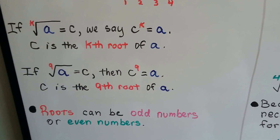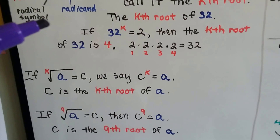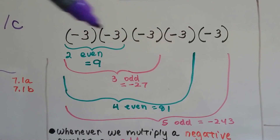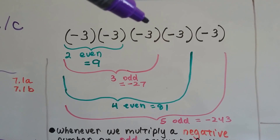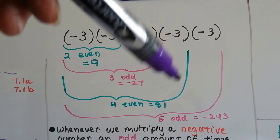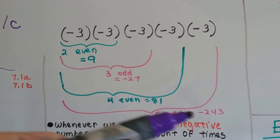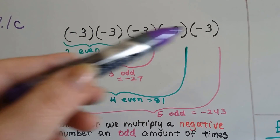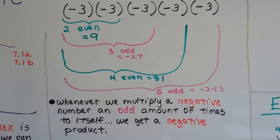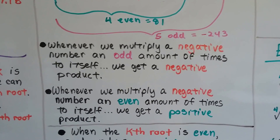Roots can be odd numbers or even numbers — we discussed that in the last video. So this could be an odd or even number. 9 is an odd number, and 4 would be an even. When we have negative 3 times negative 3, it's going to make a positive 9 — that's an even amount of negative 3s, there's 2 of them. When we have an odd amount of negative 3s — now we have 3 of them — it's going to make negative 27. When we have 4 of them, it brings us back to positive 81. So every time we have an even amount, we have a positive. Every time we have an odd amount, we have a negative answer. Whenever we multiply a negative number an odd amount of times to itself, we get a negative product. Whenever we multiply a negative number an even amount of times to itself, we get a positive product.